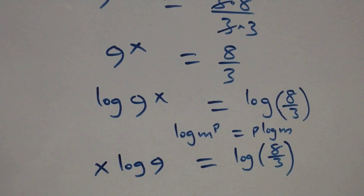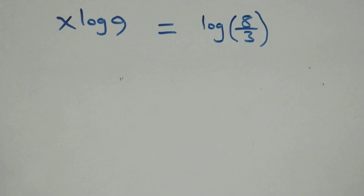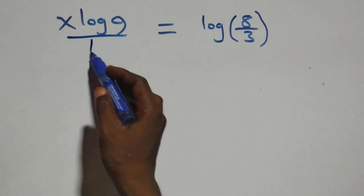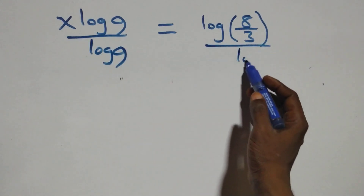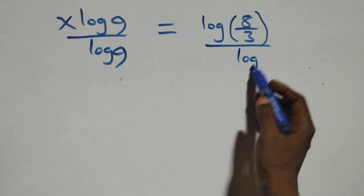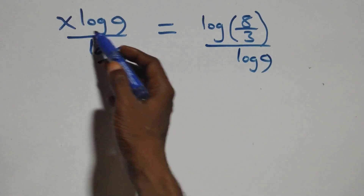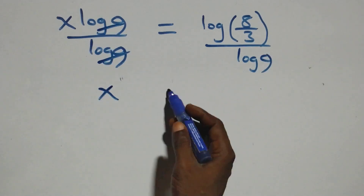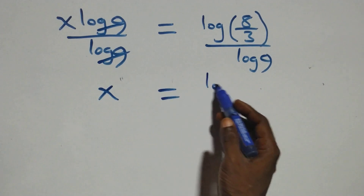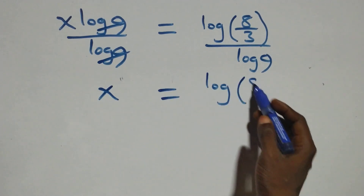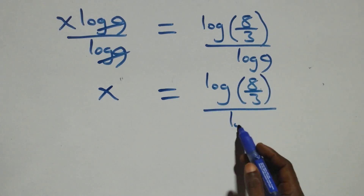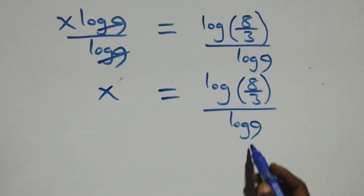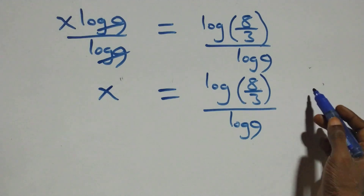The next step, we divide both sides by log nine. Log nine cancels, and we have x equals log of eight over three, divided by log nine.